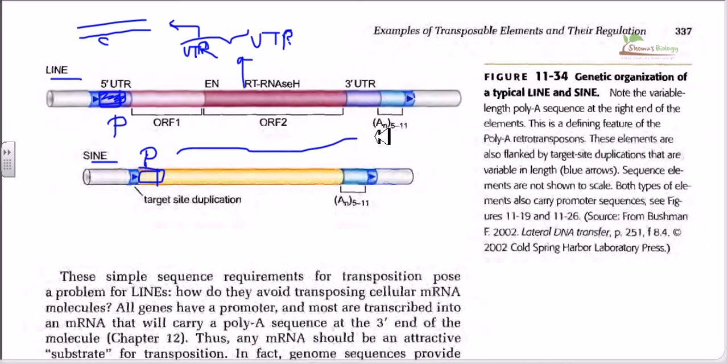Now this adenine base sequence is important for the incorporation of the DNA onto the target site, because at the target site of the DNA—suppose this is the target DNA—there is a particular region right after the cleavage of this target site. There is a single strand nick and there will be a production of poly-T.